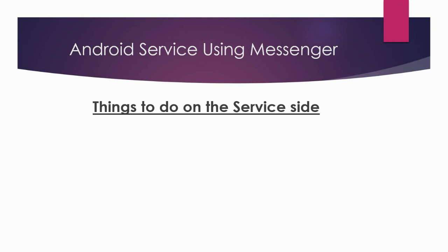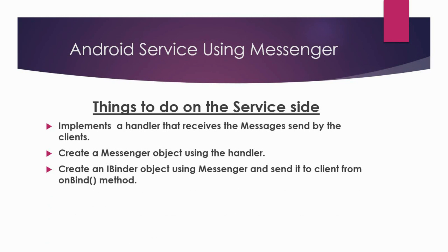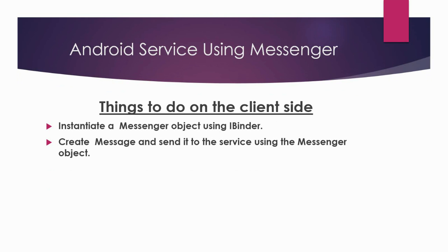Here are the steps you have to do on the service side. First, you have to implement a handler that receives all the messages sent by the client. Next, you have to create an object of Messenger using that handler object. And the final thing you need to do on the service side is to create an iBinder object using that Messenger and send back that iBinder object to the client from the onBind of the service. On the client side, instantiate a Messenger object using the iBinder object, create a message, and send that message to the service using the Messenger object.